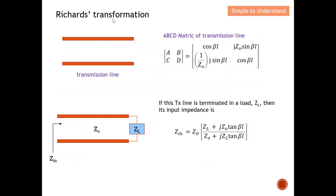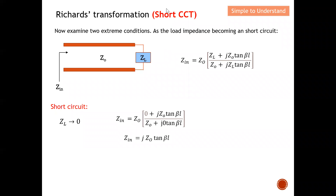Let's take a look at how Richard's transformation is derived. A transmission line can be characterized by its ABCD matrix. When a load ZL is terminated at the end of the transmission line, the input impedance Zin is governed by the standard transmission line input impedance equation. I will discuss in a future video why this input impedance formula applies, but for now, accept that with a load ZL terminated at the line, the input characteristics are governed by this equation.